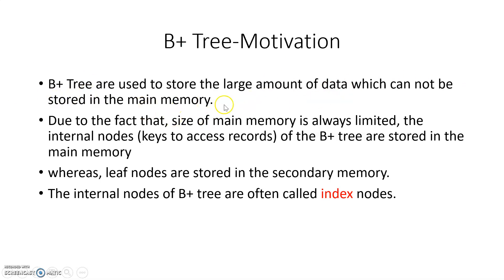B+ trees are used to store large amounts of data which cannot be stored in main memory. The main memory is always limited. The internal nodes of the B+ tree are stored in the main memory, while the leaf nodes — which hold more data — are stored in secondary memory. The internal nodes are also known as index nodes. Through the index nodes we can reach the leaf nodes in secondary memory and access the data.